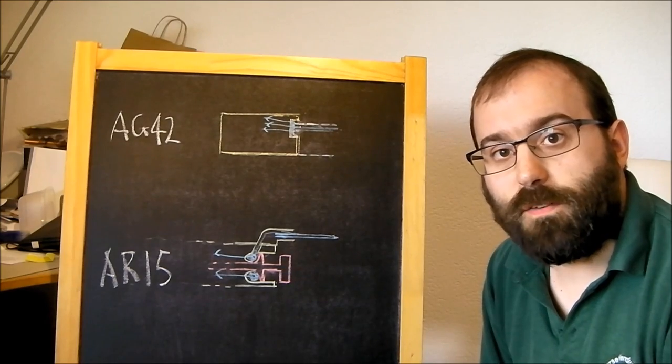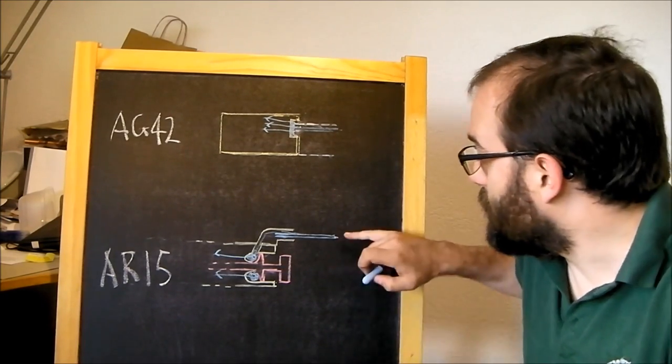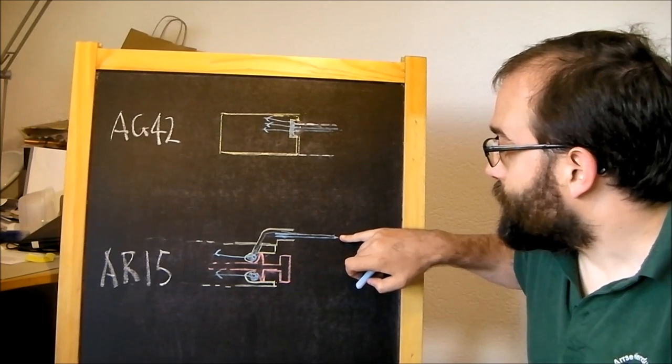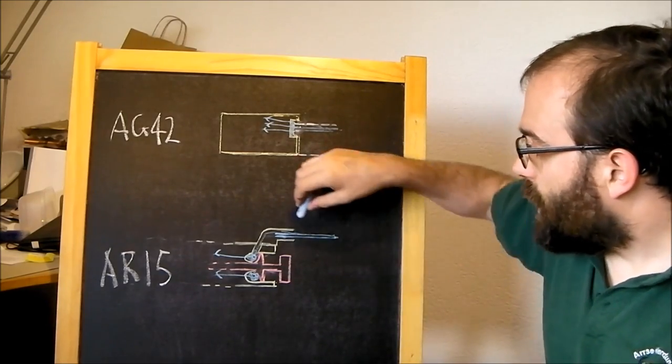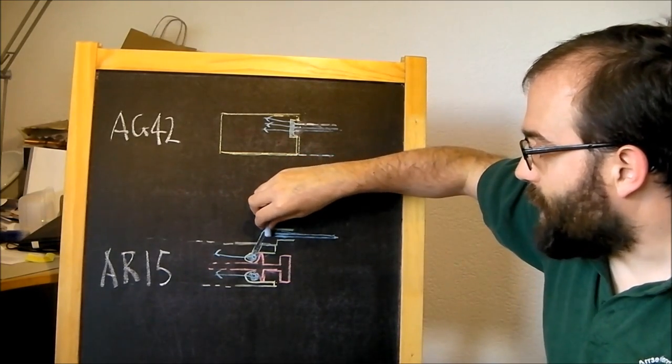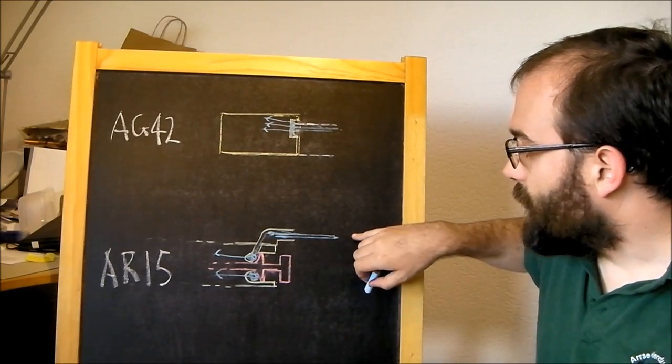Now another reason why AR-10 and AR-15 type platforms can be quite accurate when they're direct gas impingement is that the gas tube is not very high of the bore, it can be very, very low. And all the reaction from the gas pressure happens up here, back by the receiver.